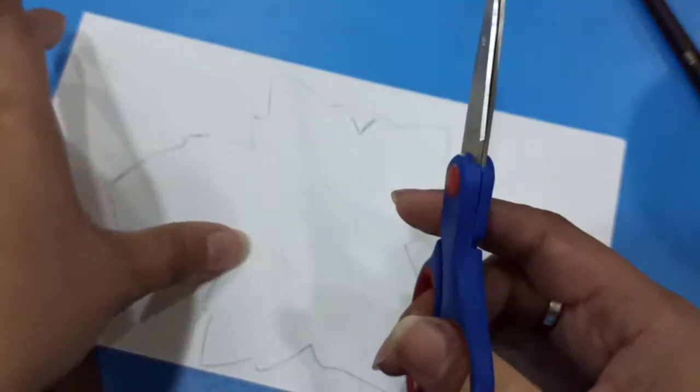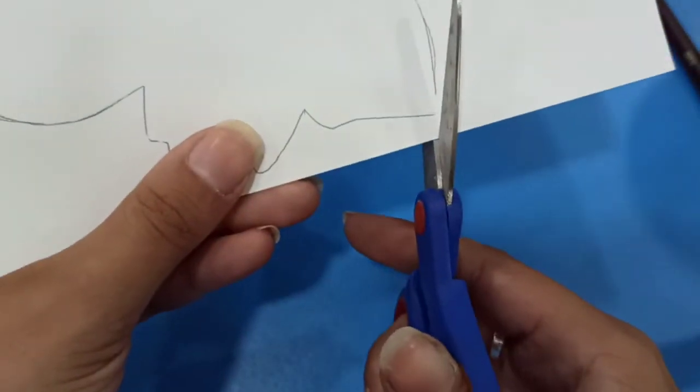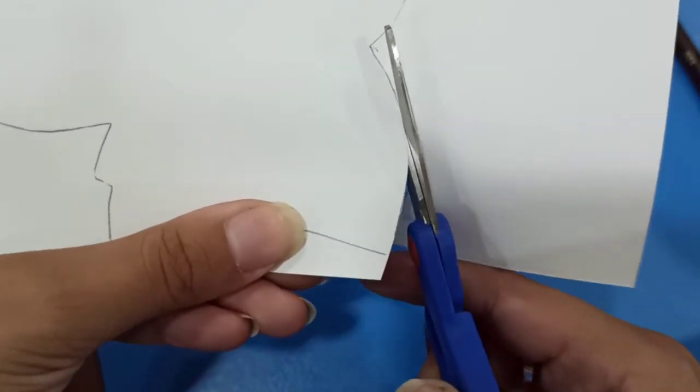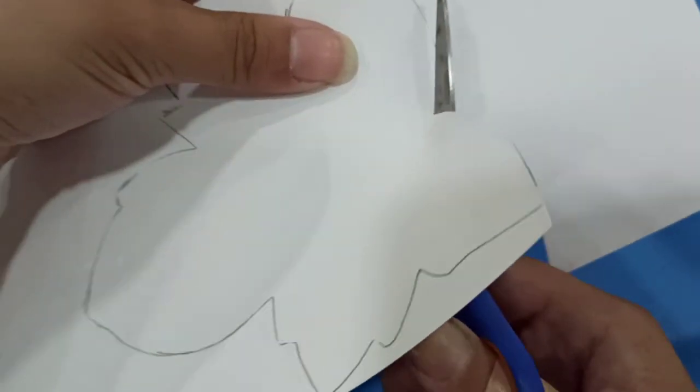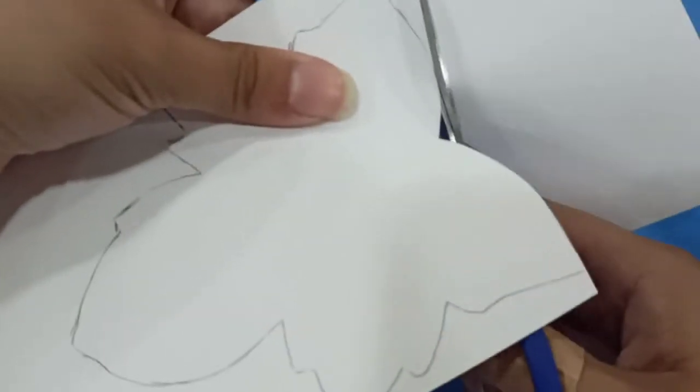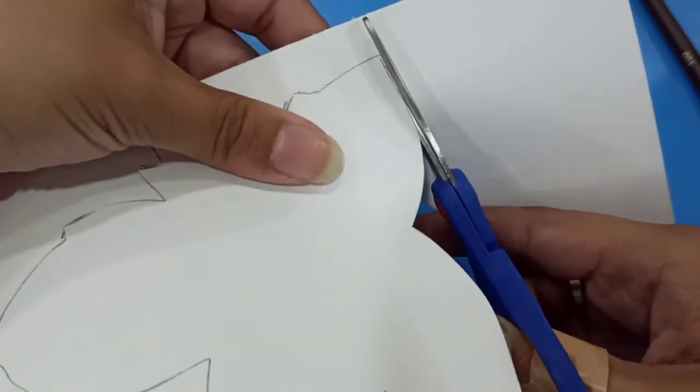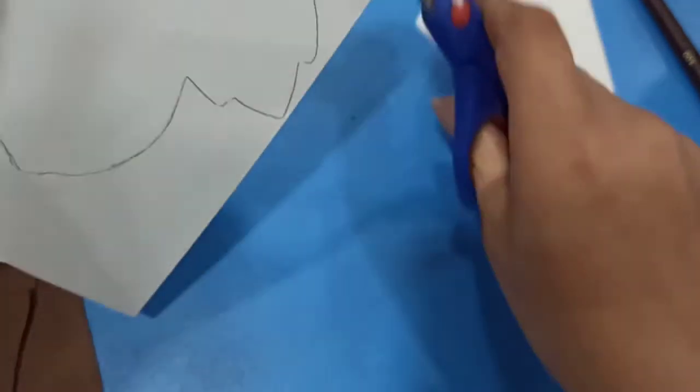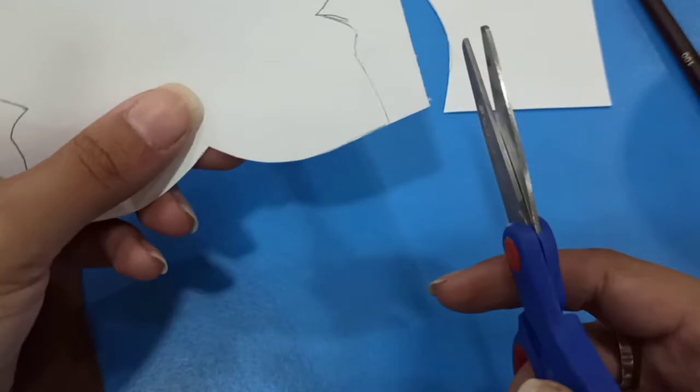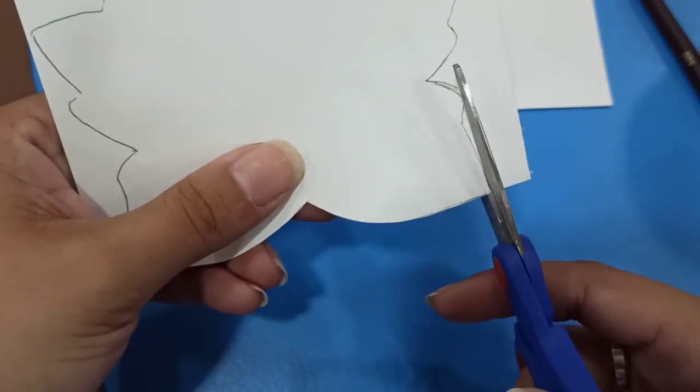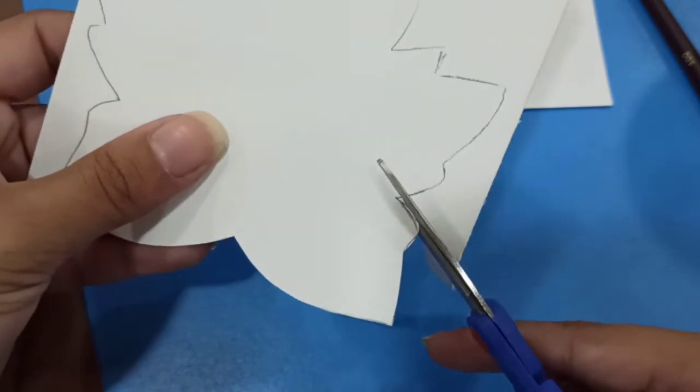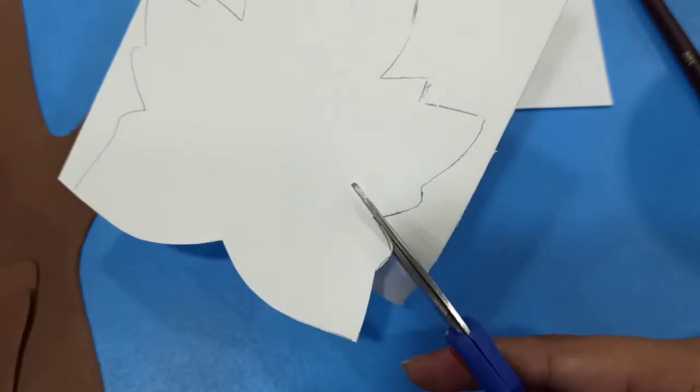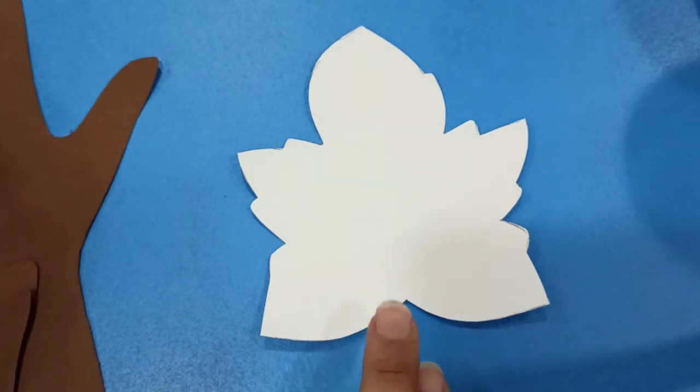We're going to cut using the scissors. So the parents will do that because the kids didn't practice how to hold the scissors until now. So we're just practicing now how to use the pencil, how to use the watercolors. And it looks like that. So I'm going to cut it. I'll show you the results. And this is the result.